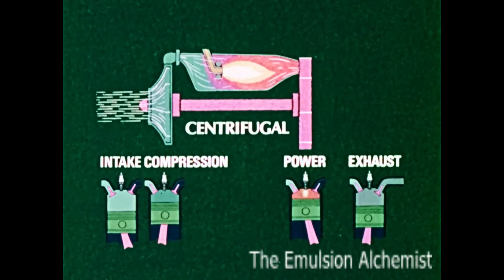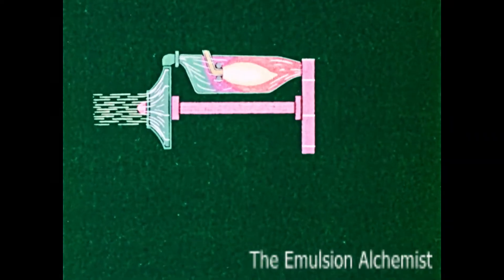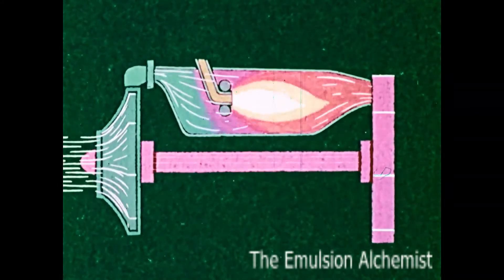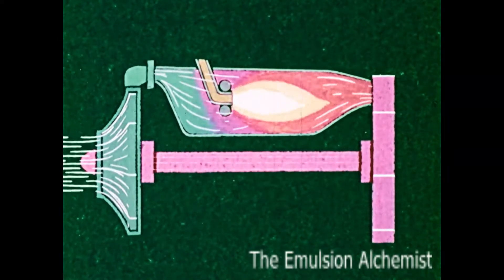This compressor is a centrifugal type. The rotor takes in outside air at the center and throws it outward, giving it velocity and energy. A diffuser converts this energy to increased pressure for use in the combustion process.